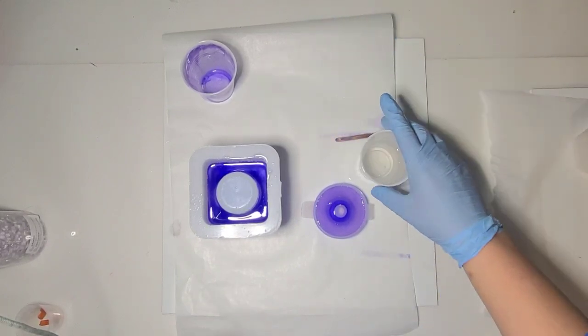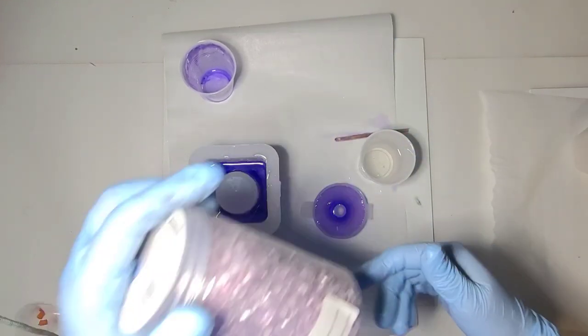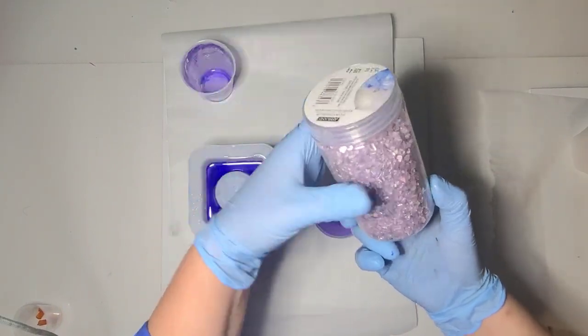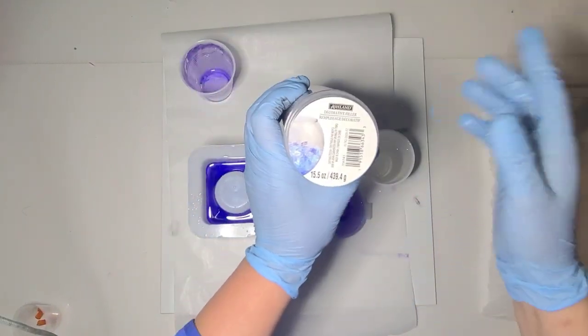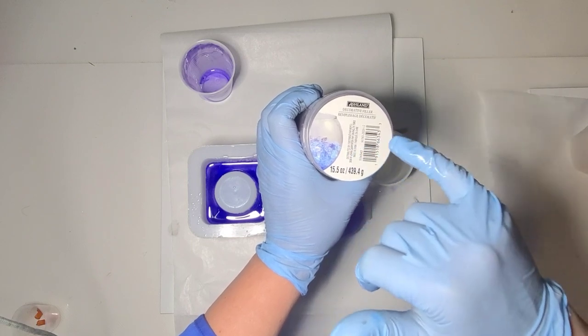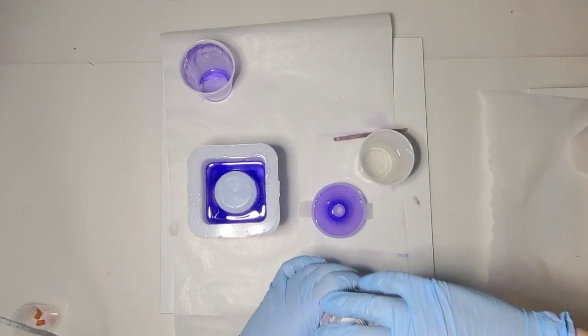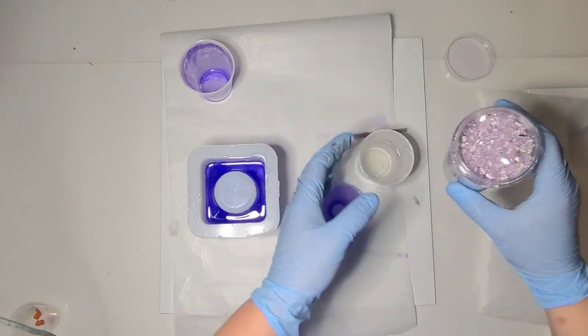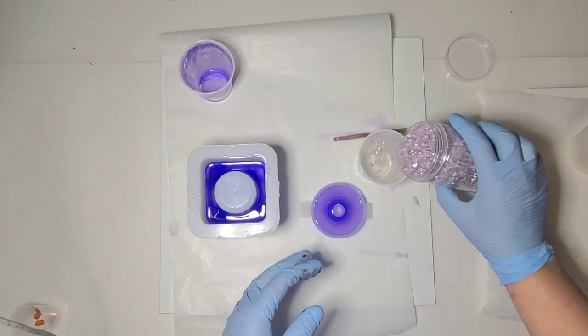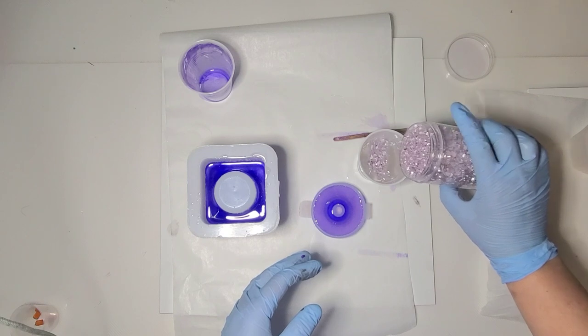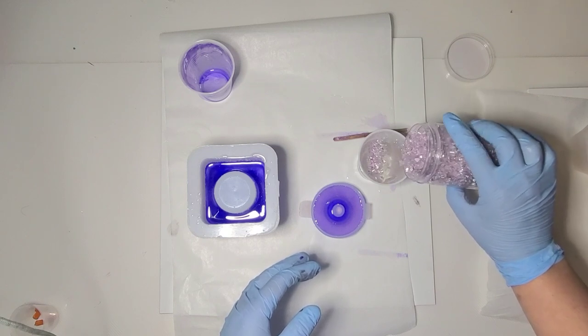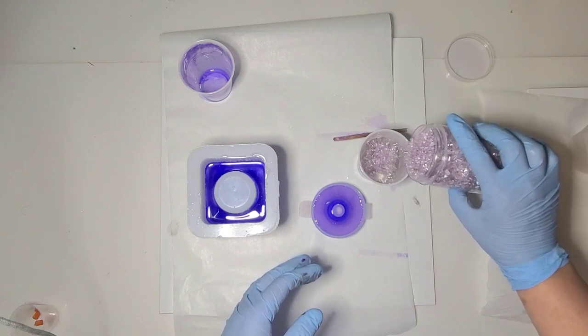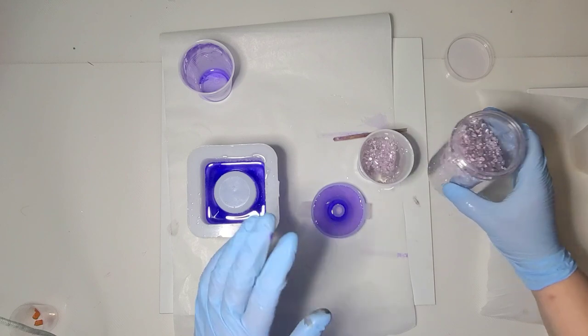So I have some more resin and I have these glass chips. These are, I believe, from Michael's. They're decorative base filler, but they're small enough they work great for resin products. These ones are lavender. So I'm gonna pour quite a few of these into the resin.